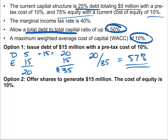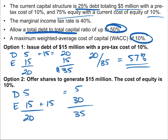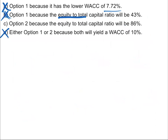Let's verify option two. We still have $5 million of debt and $15 million of equity, but this time we add $15 million to equity, giving us $30 million of equity. Total capital is still $35 million, but now debt is only $5 million of that — just 14% — which is clearly less than 50%. The equity to total capital ratio will be 86%, which matches choice C. We've already eliminated all other choices, so choice C is correct.